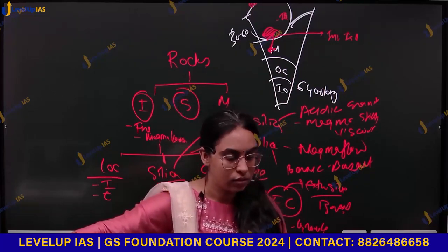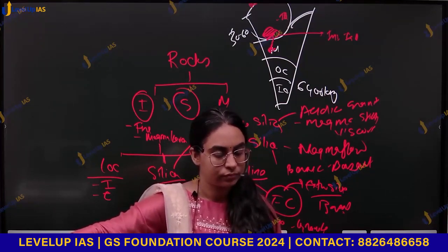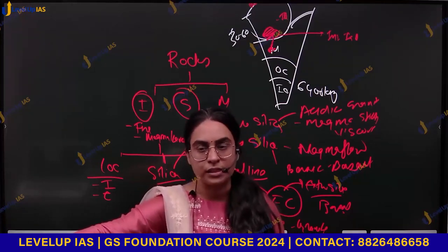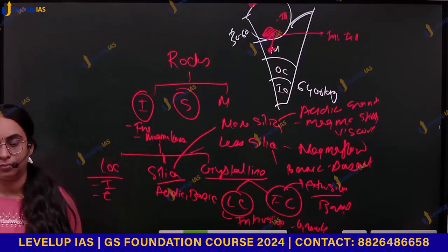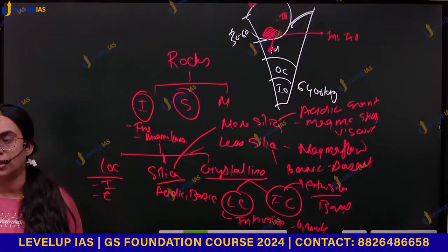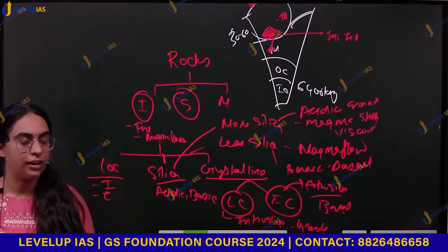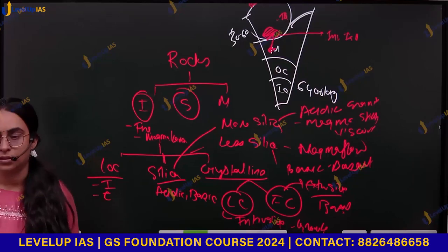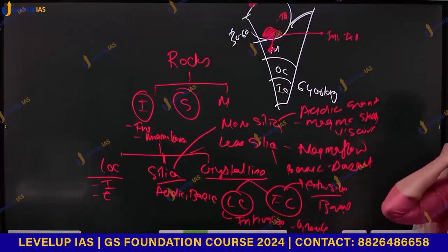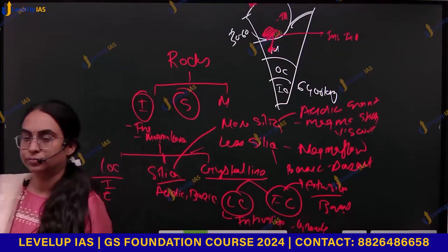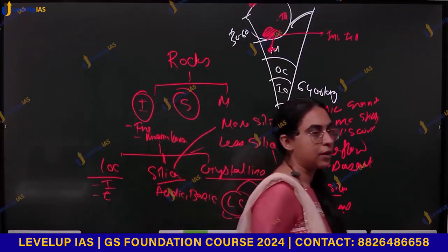If magma has more silica, then the magma is viscous — V-I-S-C-O-U-S — viscous and sticky. Example: granitic magma. When the magma has less silica, the magma is flowing in nature.